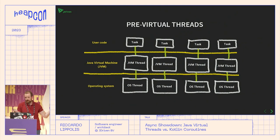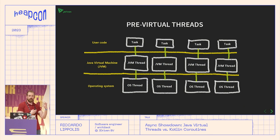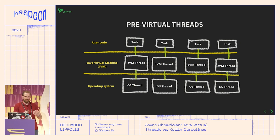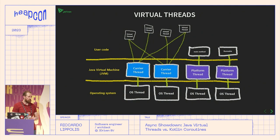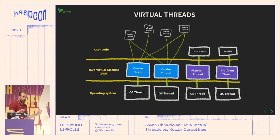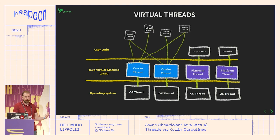Pre-Java 21, whenever you have code you want to run on a thread, a JVM thread is assigned, and below that there's an OS thread. Every thread you start ultimately gets run on a JVM thread coupled to an OS thread. With virtual threads, the standard threading model still exists. Starting from Java 21, those are referred to as platform threads — the same thread you're already used to, just relabeled to distinguish from the new model.